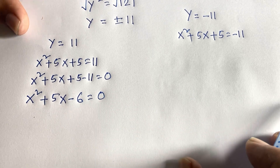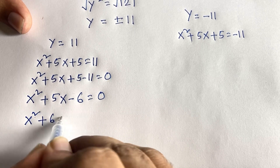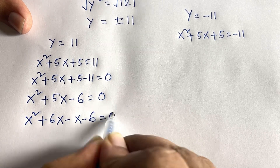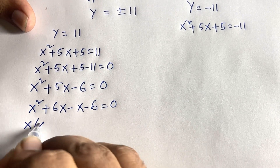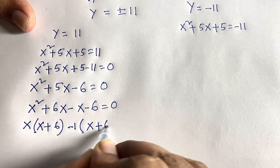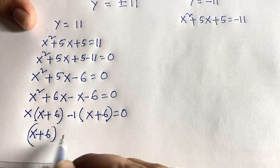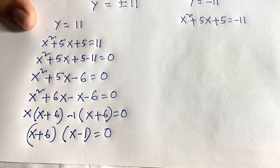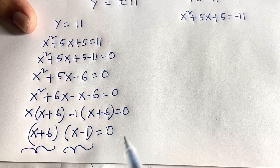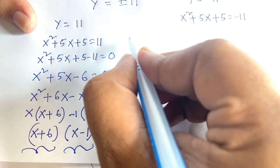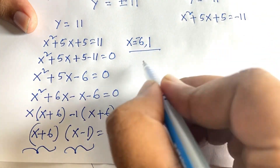Factoring x² + 6x - x - 6 = 0: x is common in the first two terms giving x(x + 6), and -1 is common in the last two terms giving -1(x + 6). So (x + 6)(x - 1) = 0. This gives x + 6 = 0 or x - 1 = 0, so x = -6 or x = 1.